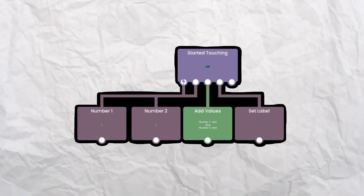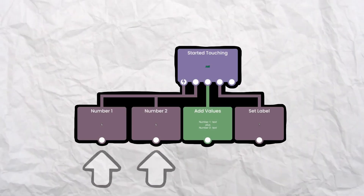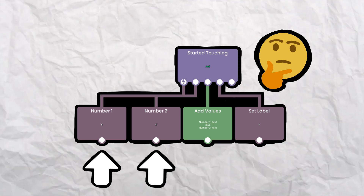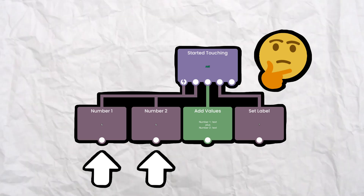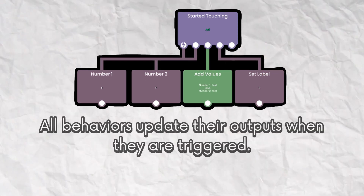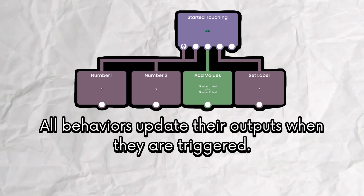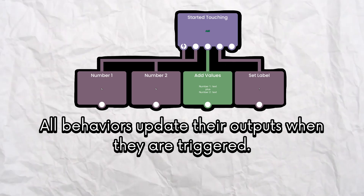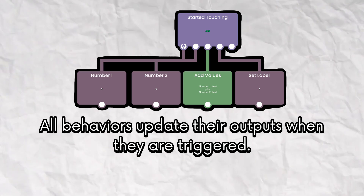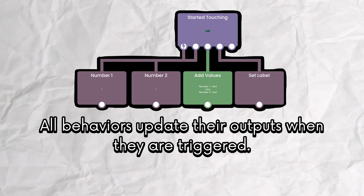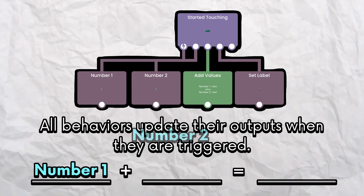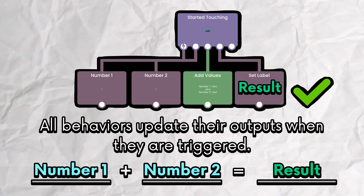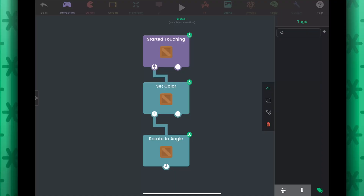You're probably wondering why these behaviors need to be under the Started Touching behavior. That's because a behavior only updates its output when it is triggered. We want to make sure the values are up to date before performing the addition operation.